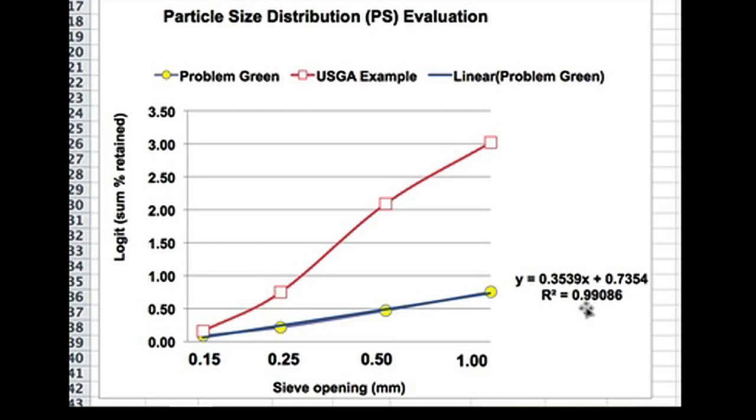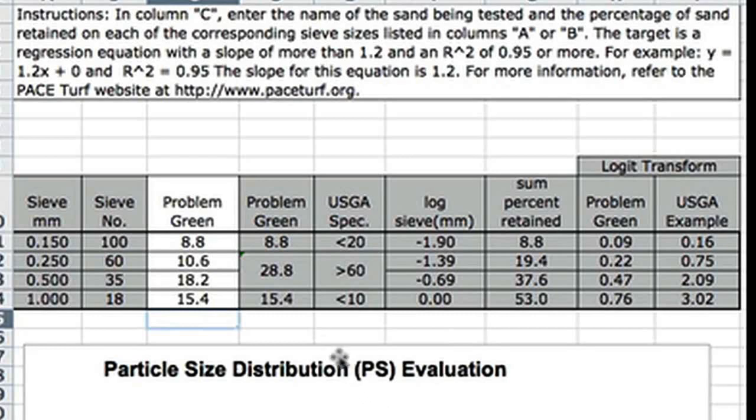So those are the targets that we are looking for. And this particular sand fails to meet the 1.2 guideline right here. It does have a good distribution of sand particles. They fall nicely along the line, but the slope of the line is too low. Now if we look at the spreadsheet, you can see that we're looking for less than 20% on the USGA spec comparison. We need to see more than 60%, we can see we only have 28.8%. And for the larger sand particles, we'd like to see less than 10% in the 1mm range. There's too many in the 1mm range. So in general, this line is not adequate.